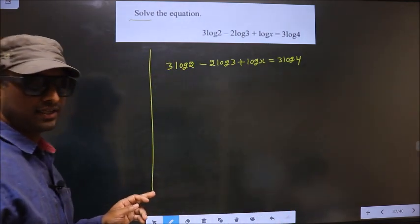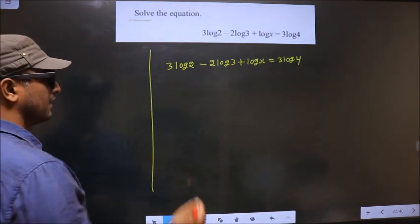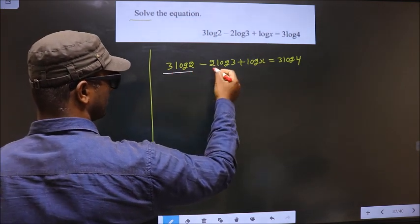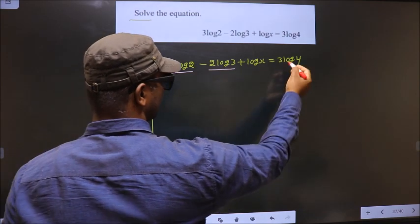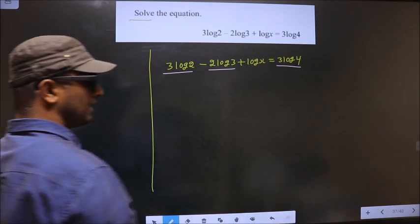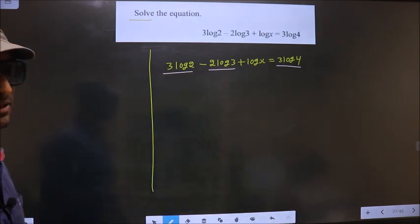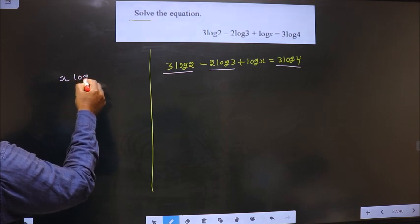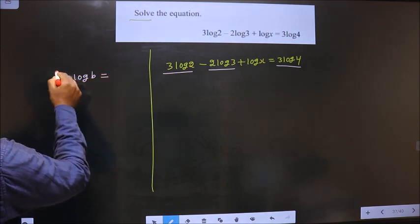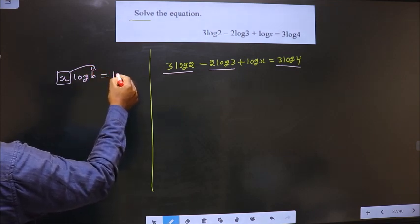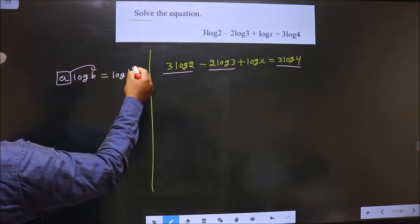Before the log we have numbers here. On these three terms we should apply the formula: a log b equals log b to the power a. Whenever you have a number before the log, it will go as the power.